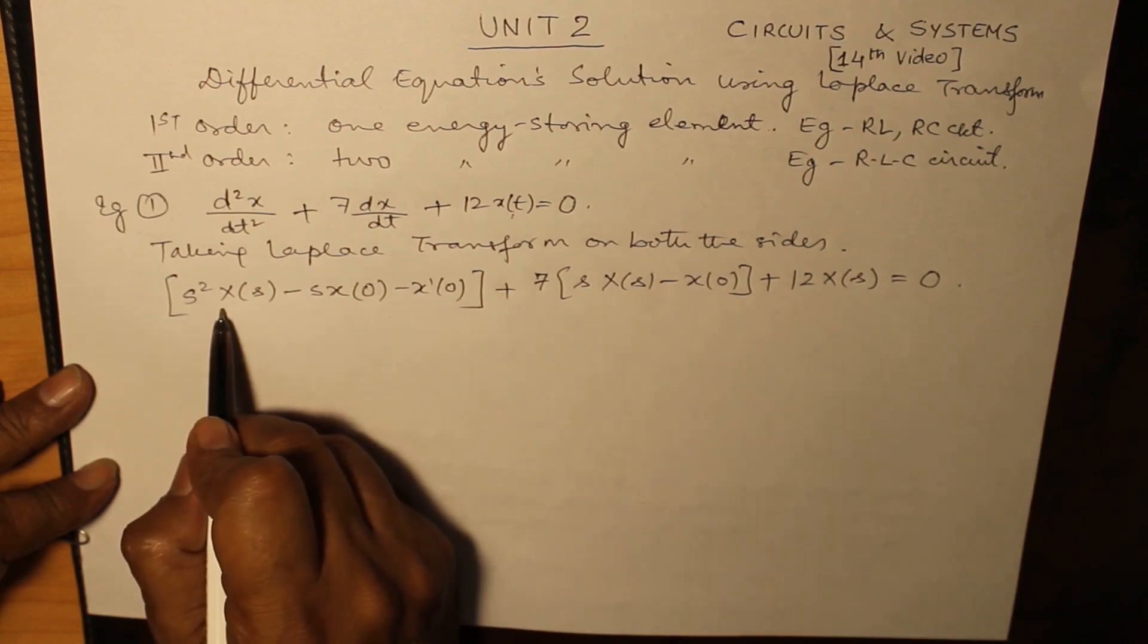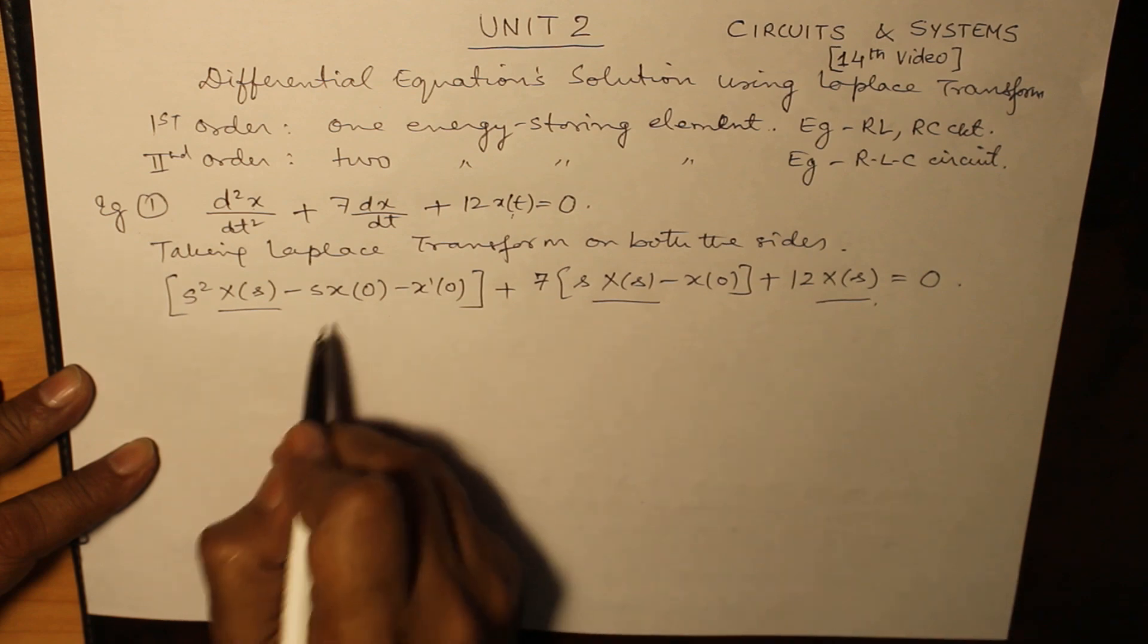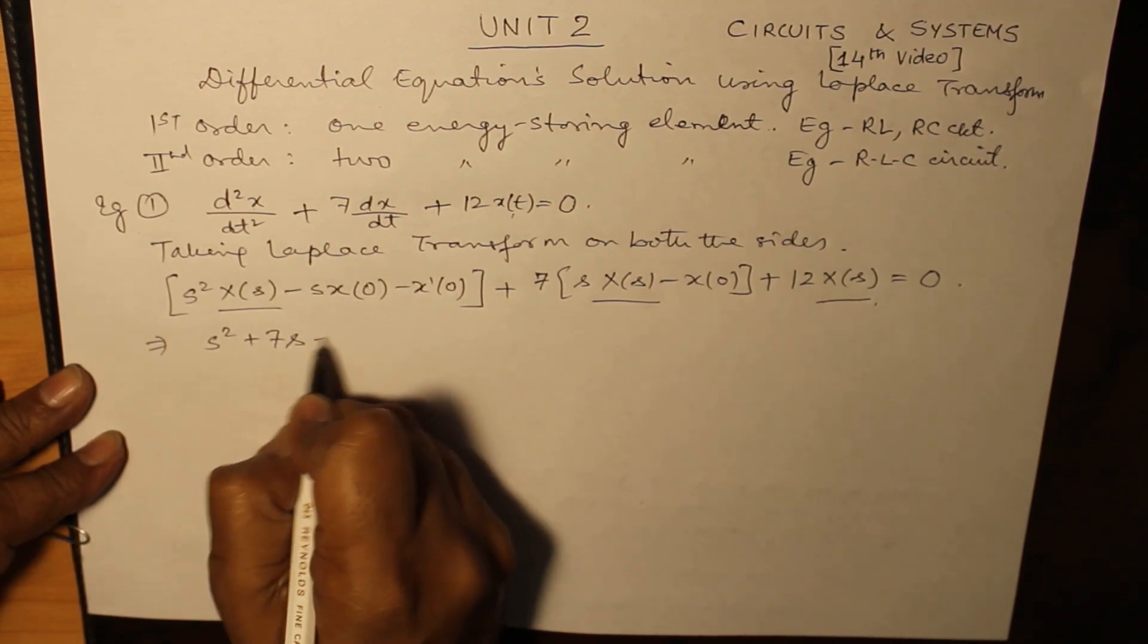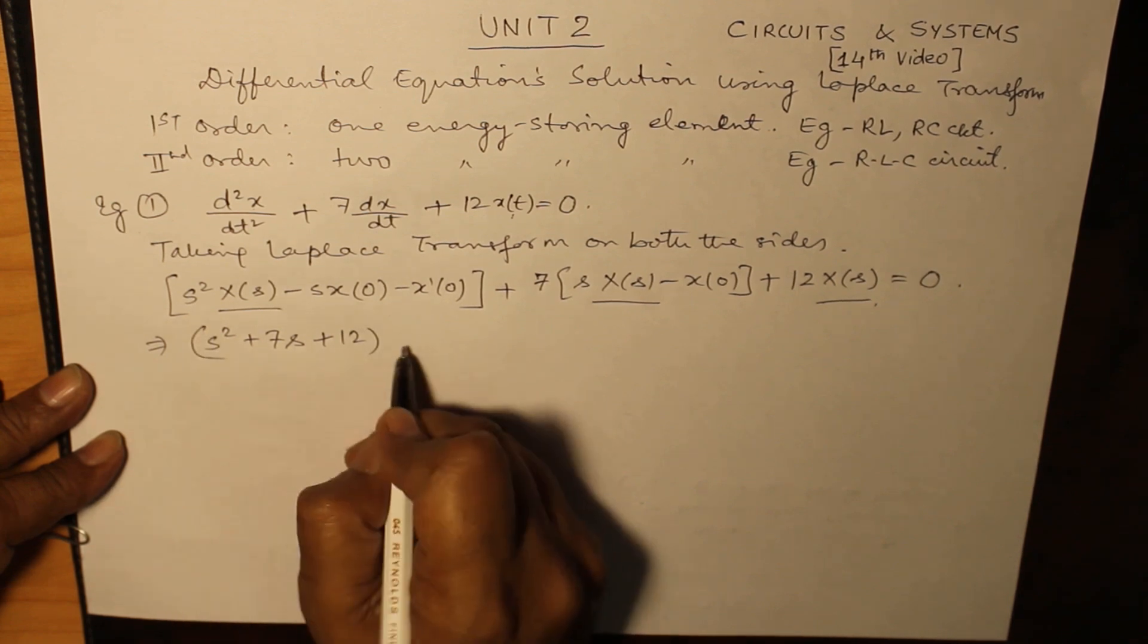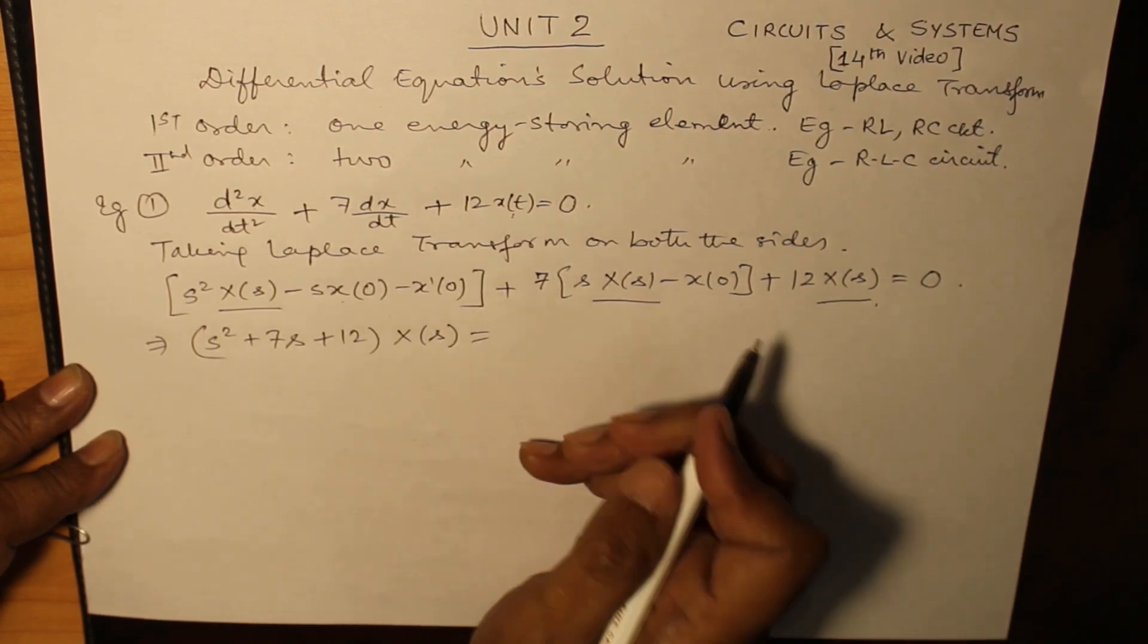Combining the terms of X(s) together we obtain (s² + 7s + 12)X(s), and taking the other terms on the right hand side.